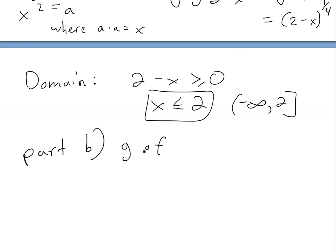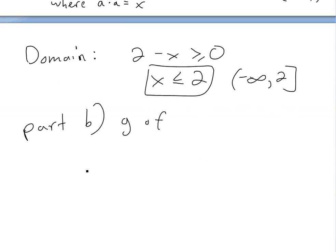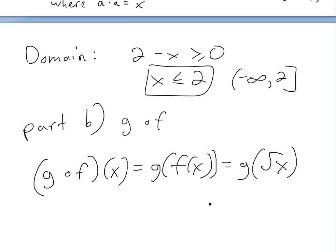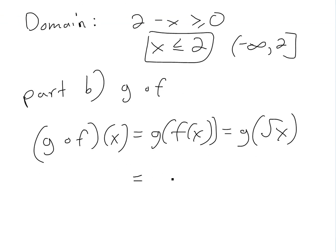Now let's look at part b, which is g circle f — or g composite f. By definition, this equals g of f of x. We apply the right side first, which is f, giving g of square root of x. We then plug this into the g of x function, which is square root of 2 minus x, replacing x with square root of x. So our function is the square root of 2 minus the square root of x.